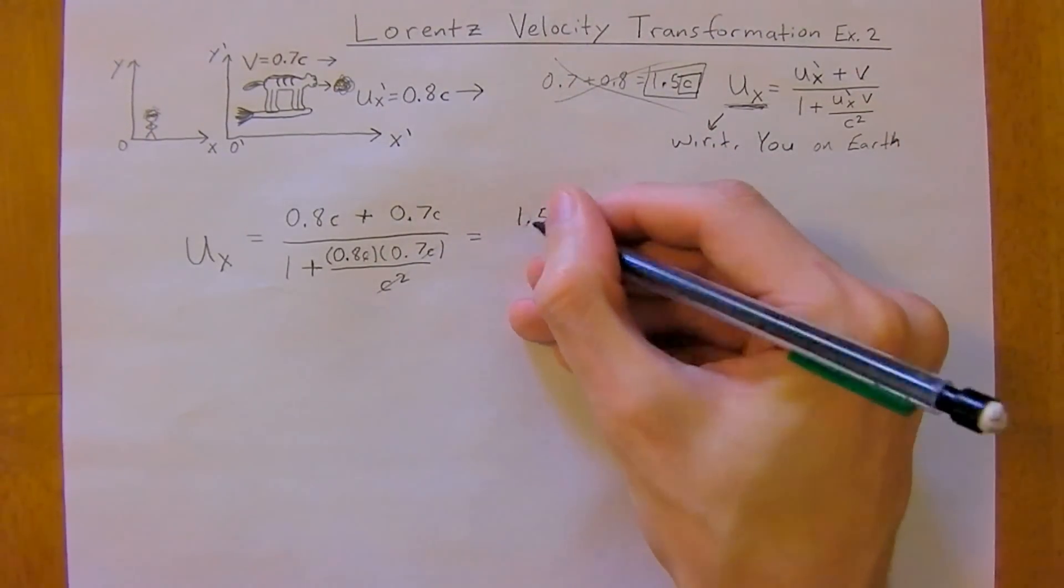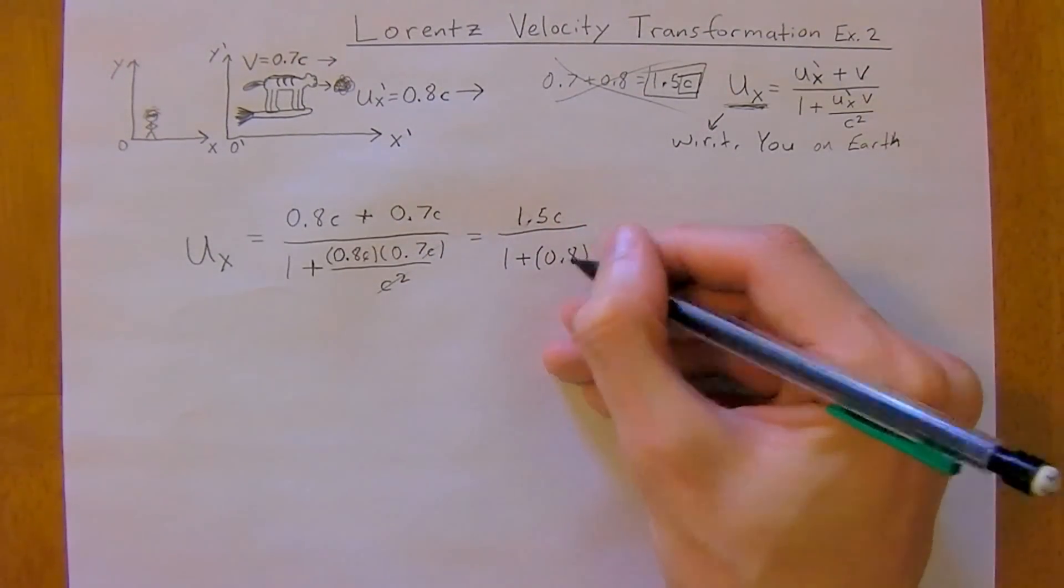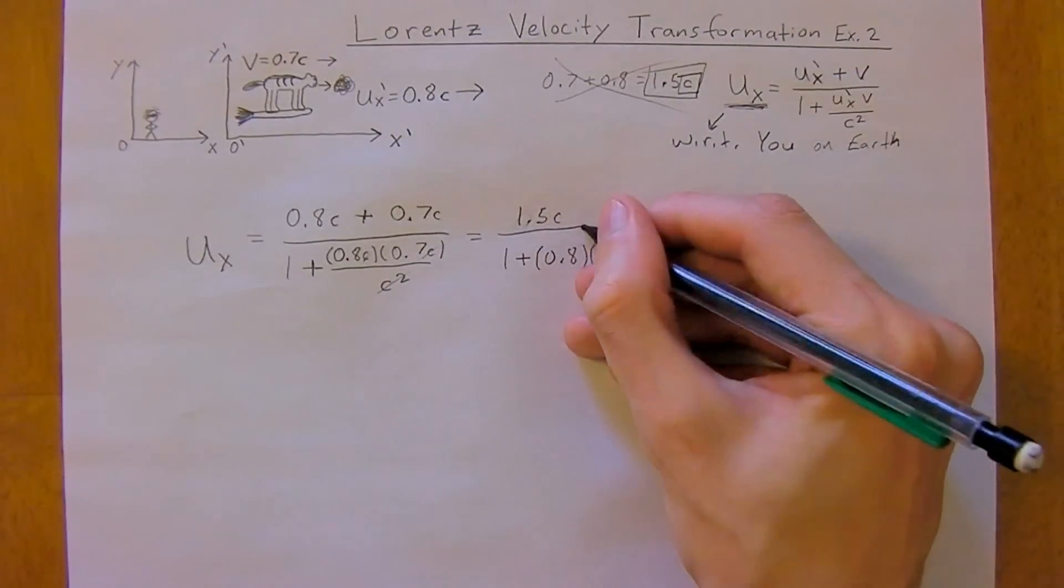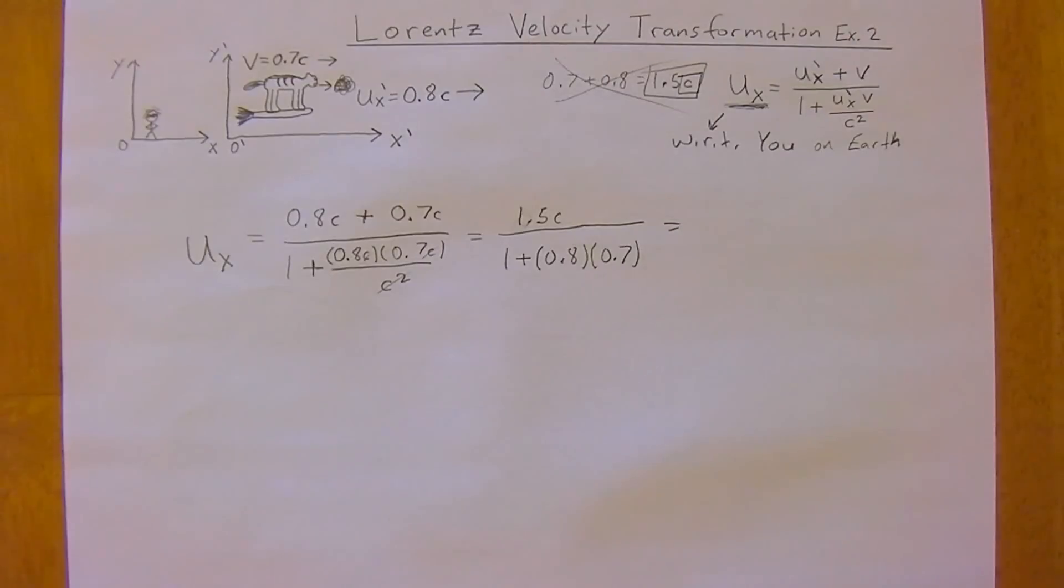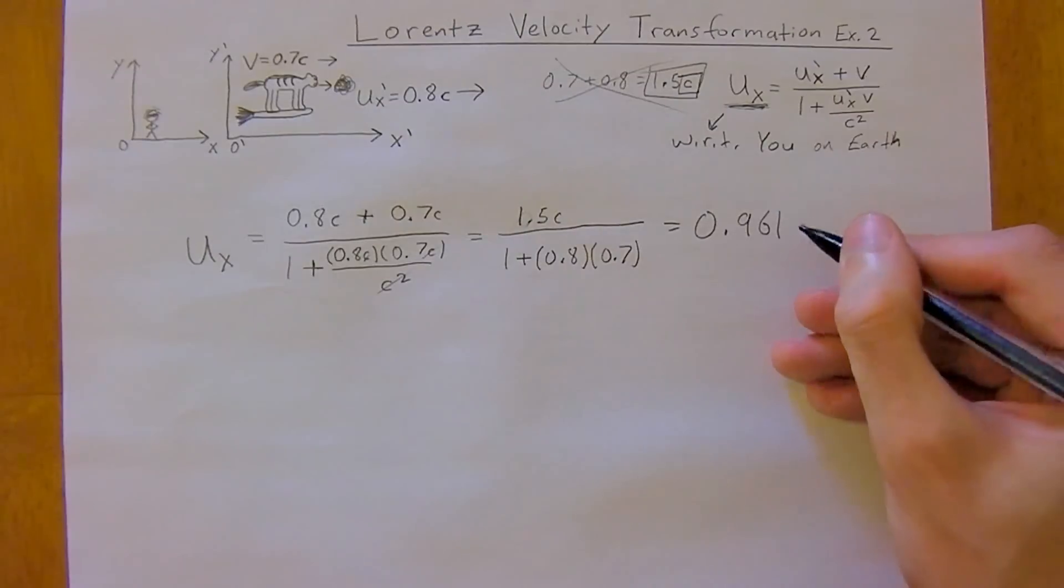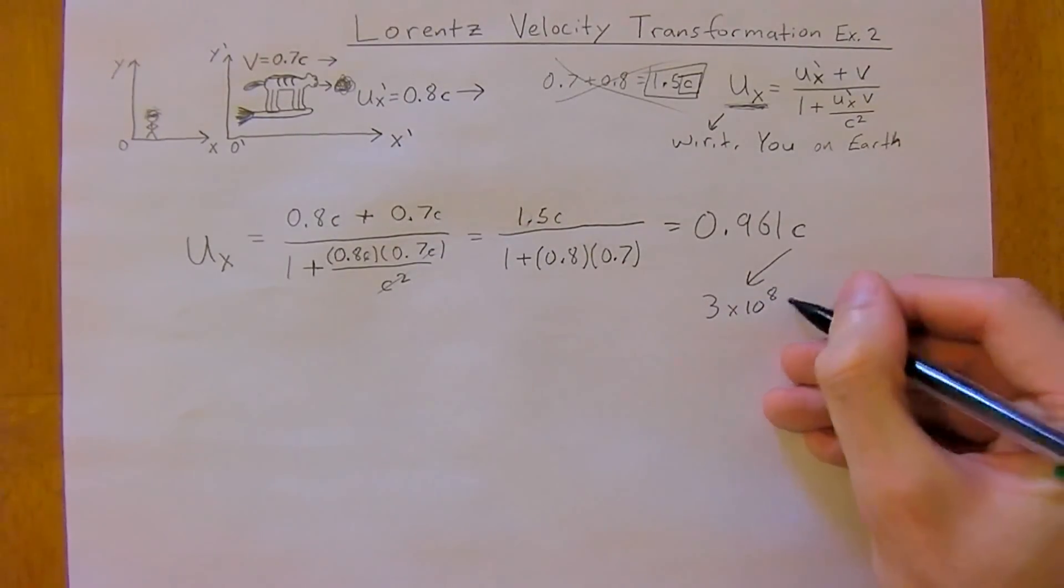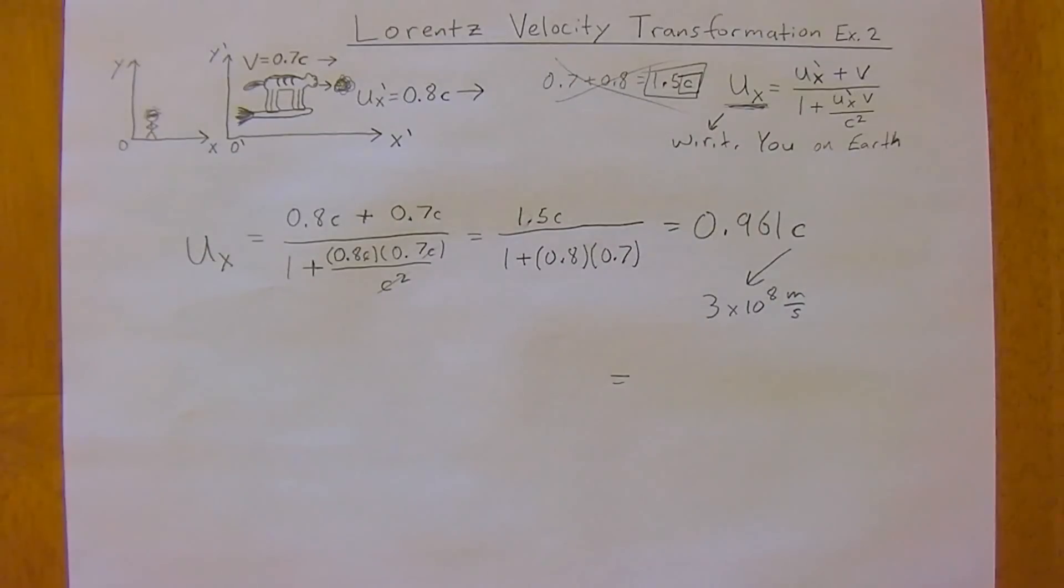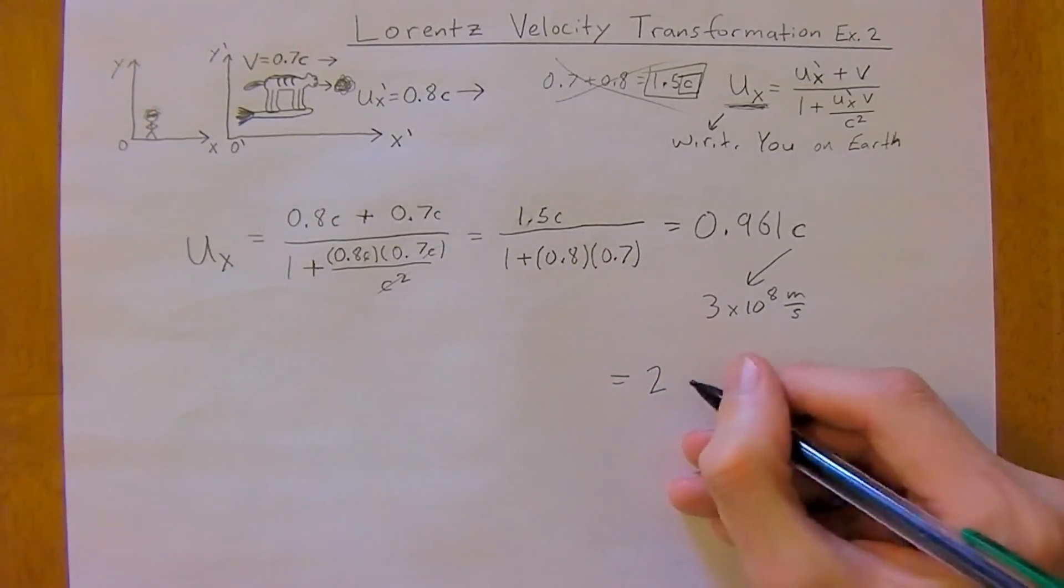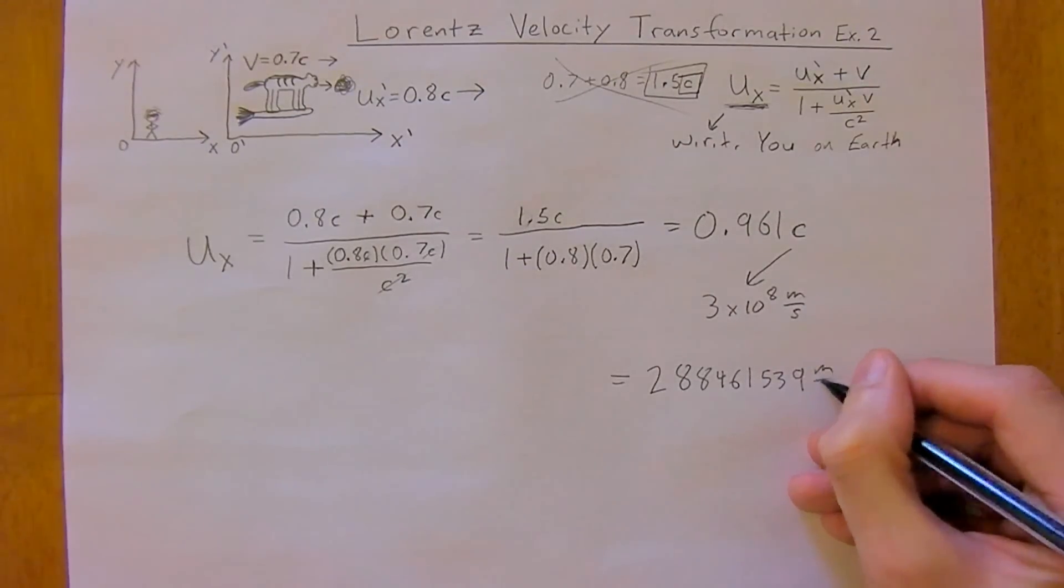So let's put that into our calculator now, 1 plus 0.8 times 0.7. So the velocity you would see is 0.961c. And really you know c is just 3 times 10 to the 8 meters per second so we could represent this another way as times 3 to the 8. So this could also be 288,461,539 meters per second which is pretty fast.